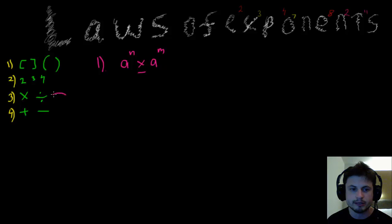What you get is you get A, and since this is actually multiplication, it's going to become addition. So it's going to be A to the N plus M. So it goes down a level and becomes addition from multiplication.